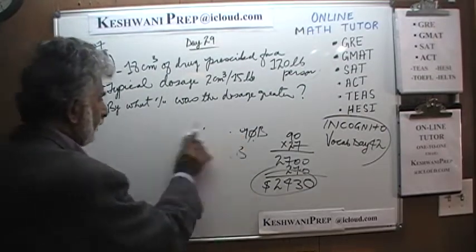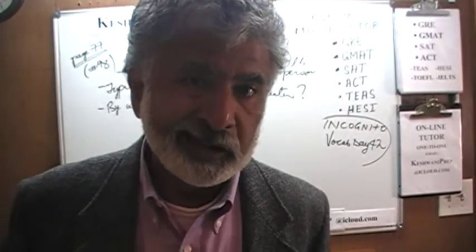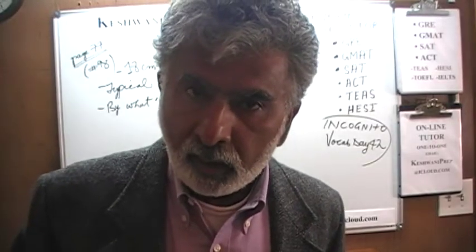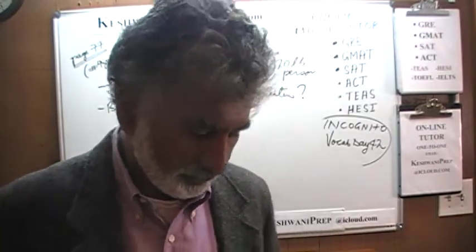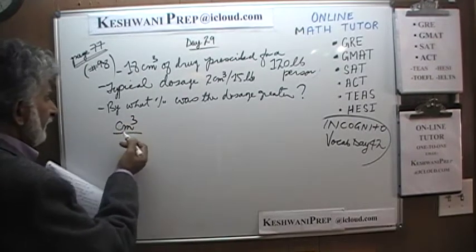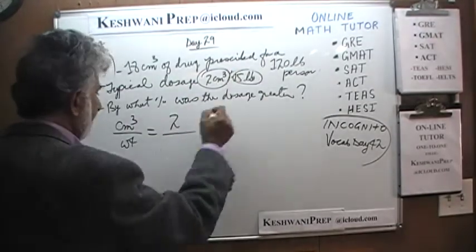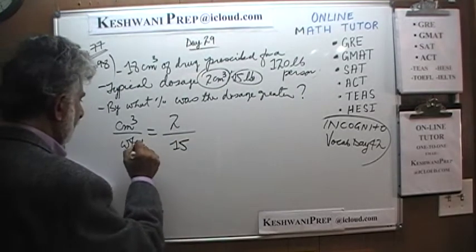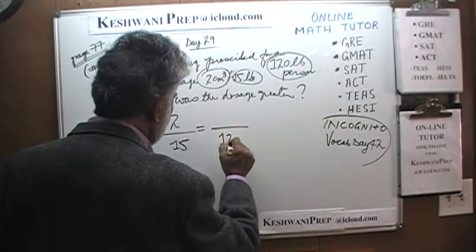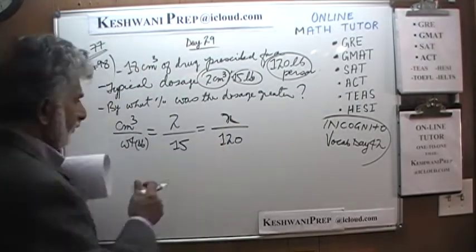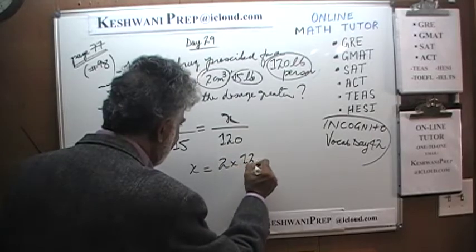Let's find out. The first thing we need to find is how much we should have given the person. Set it up as a proportion problem: cubic centimeters over weight. We are told it should be 2 cubic centimeters for every 15 pounds, and we have a person who weighs 120 pounds. So the correct dosage is 2 times 120 divided by 15.